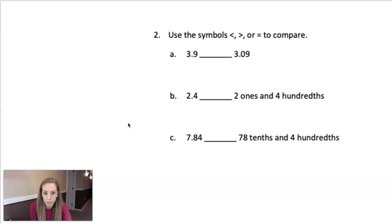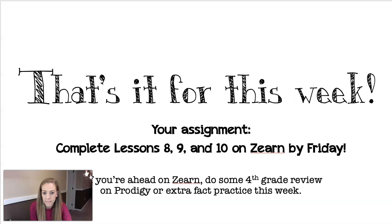Same thing. 3.9, 3.09. This is really like $3.90 or $3.09. If you do come across these, it is helpful, if you're ever using paper and pencil again, to write what they're actually telling you. 2 ones and 4 hundredths. It's helpful to write it out and then it's easy to compare. Because then we know that this is like $2.40, which is greater than $2.04.